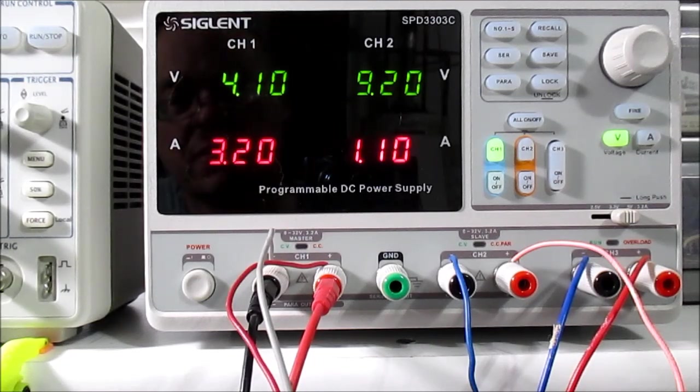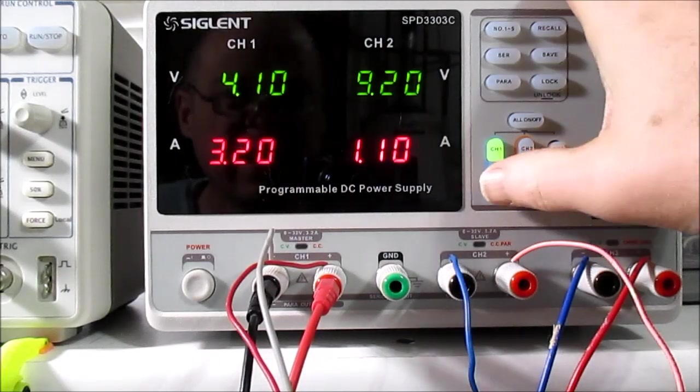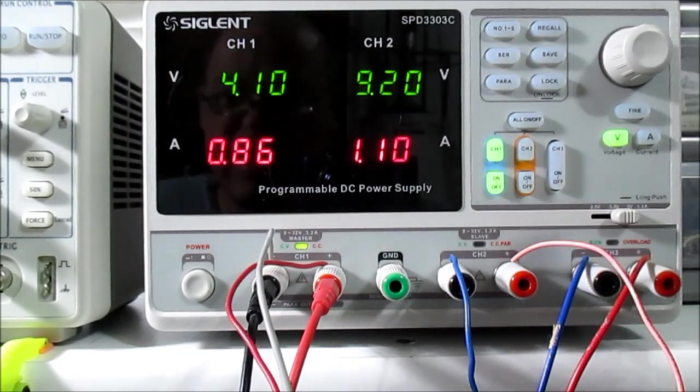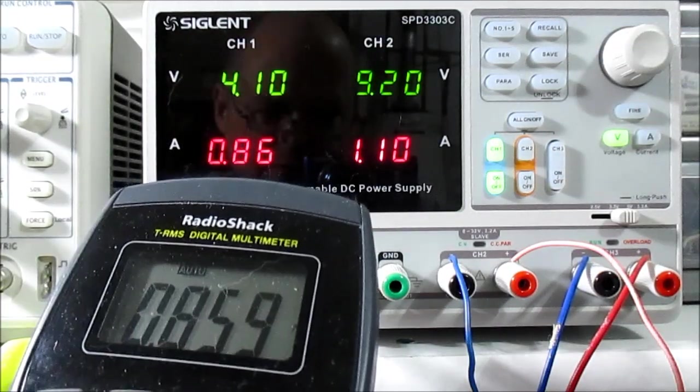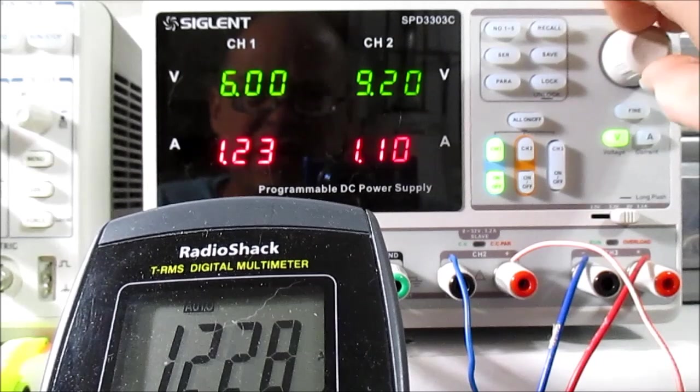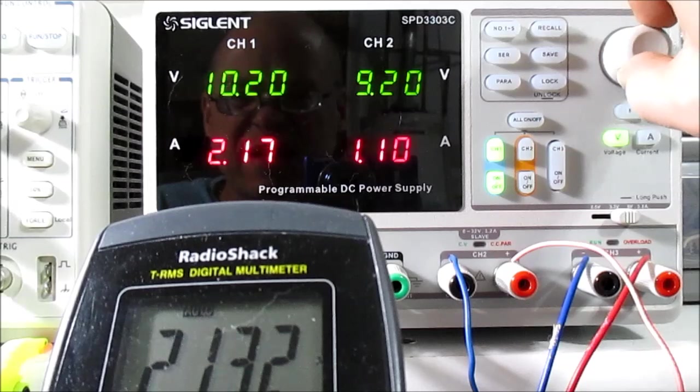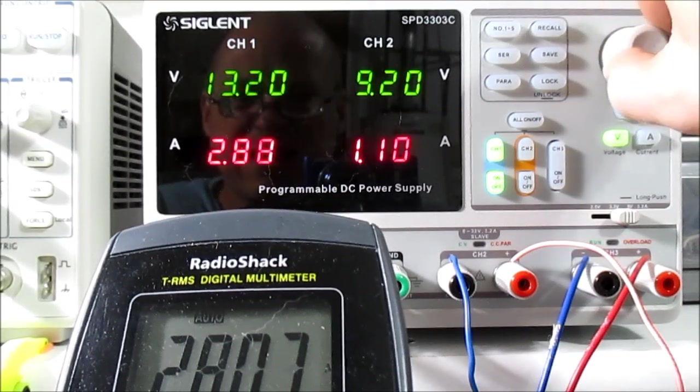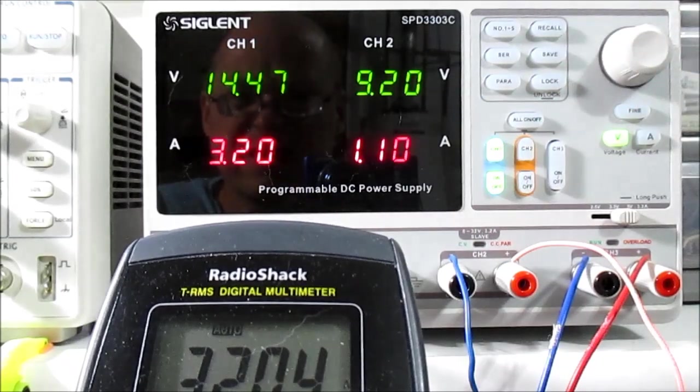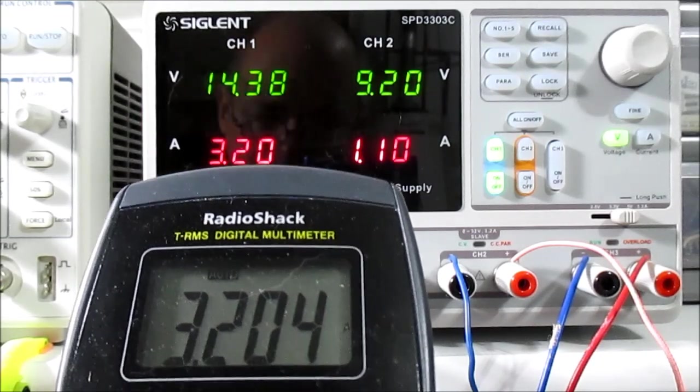Now, I've adjusted the current for 3.2 amps on channel 1. And, we'll turn the output on. And, now it's showing the measured current. And, you can see it agrees. And, I'll just hold this here. And, turn up the voltage until we get maximum current. We'll see what it stops at. Okay. Well, it does hit 3.2 amps. So, it is putting out its rated current.